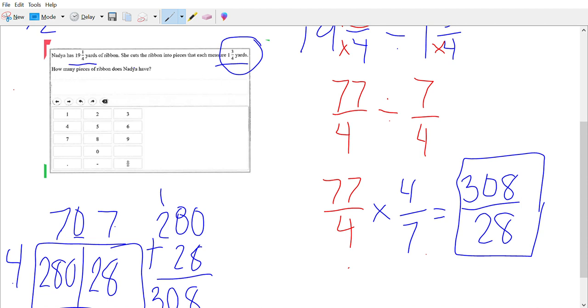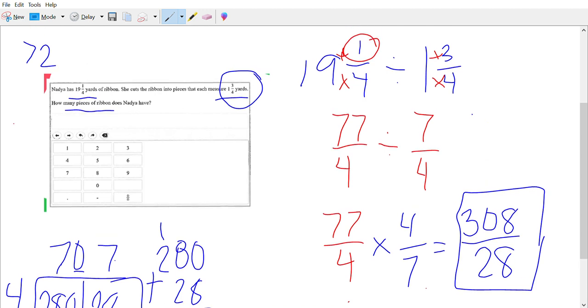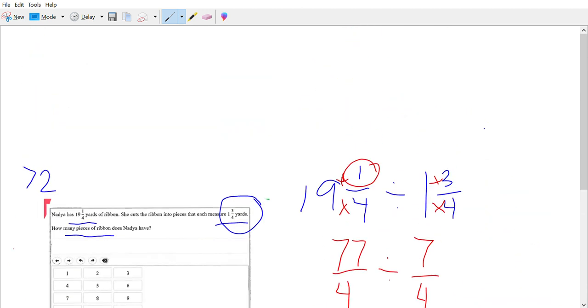We need to break it down into mixed numbers or whole numbers to find how many pieces of ribbon she has. Because if we tell our answer is 308 over 28, although it is correct, it is not completing the question. So 308 over 28.